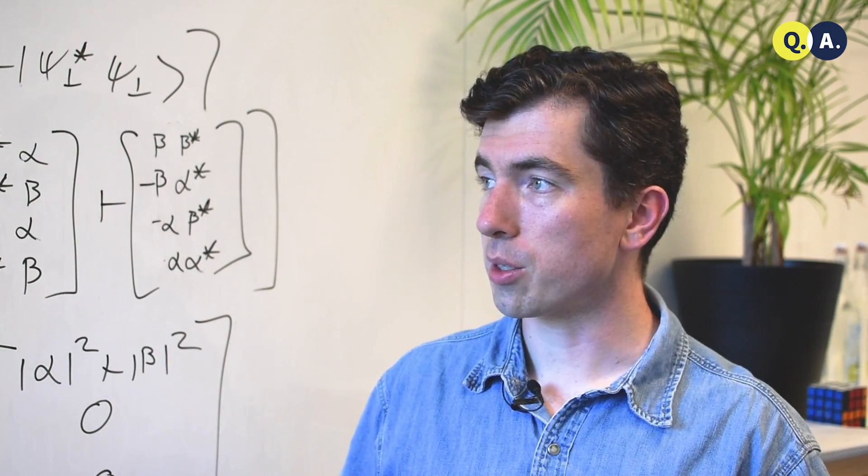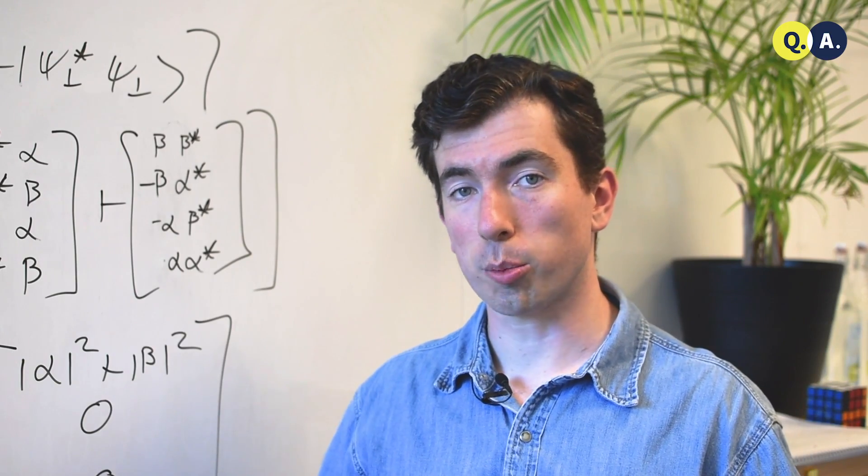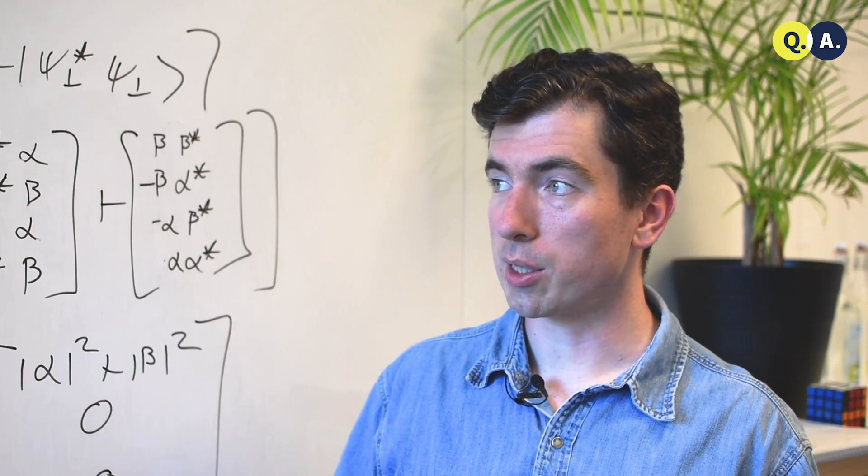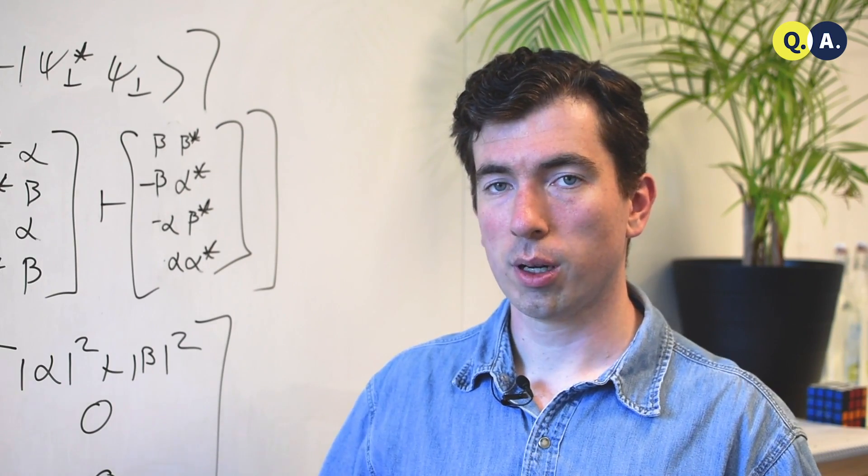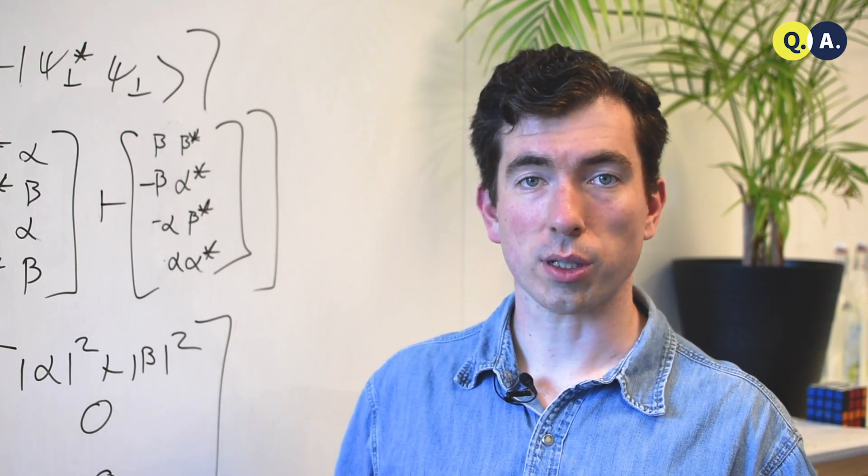Now, if she measures instead in the basis psi star, psi star perp, she can tell that Bob has the state psi or psi perp, depending on her measurement result.